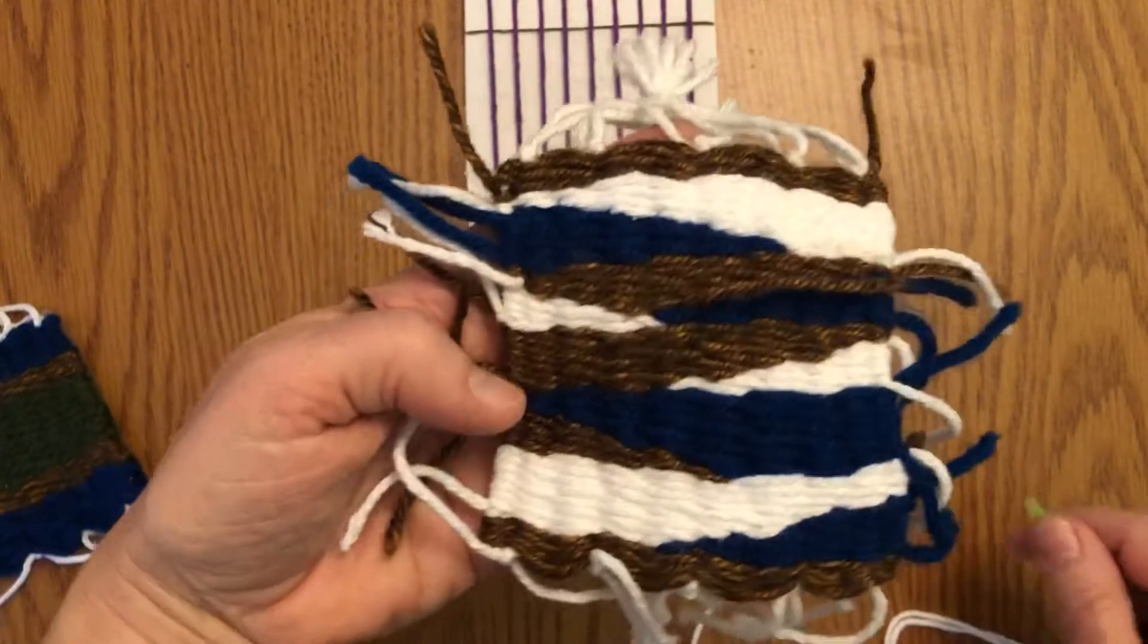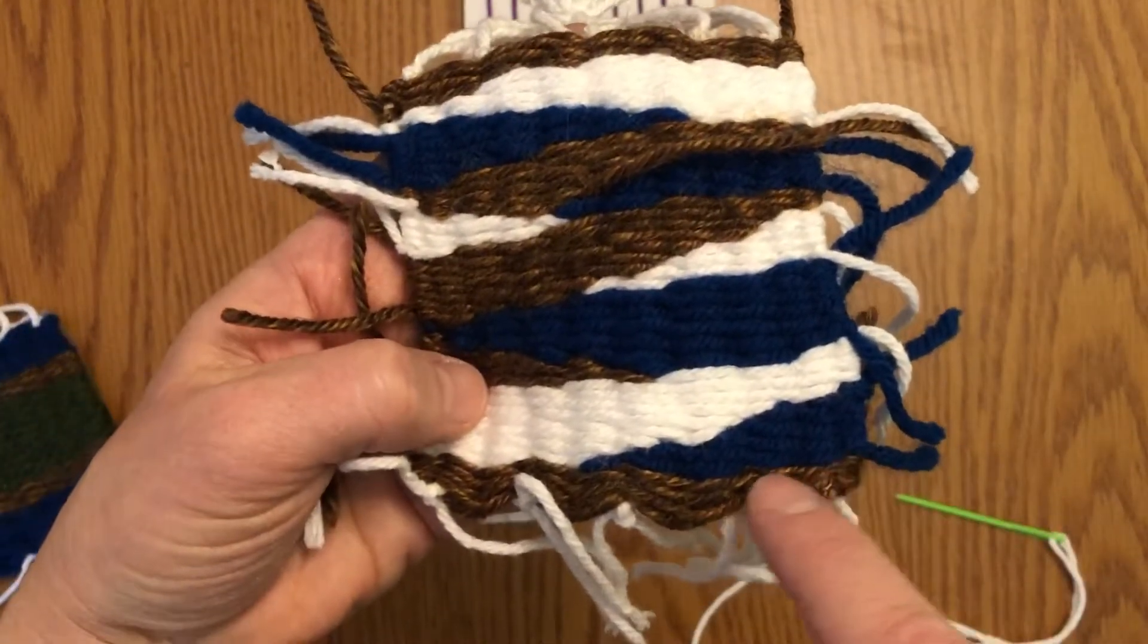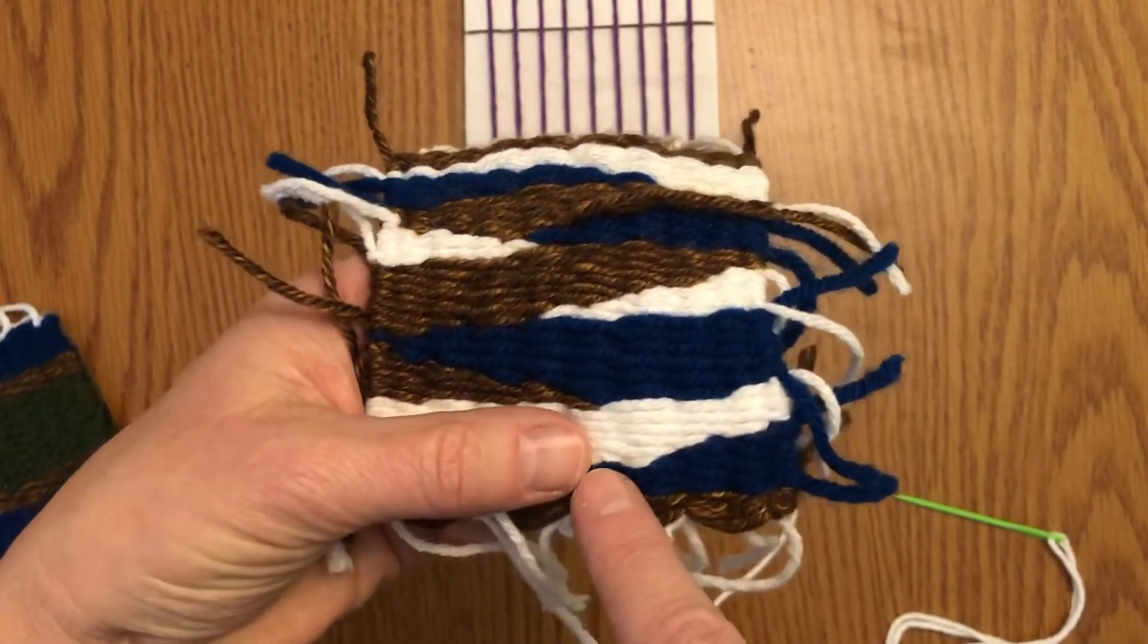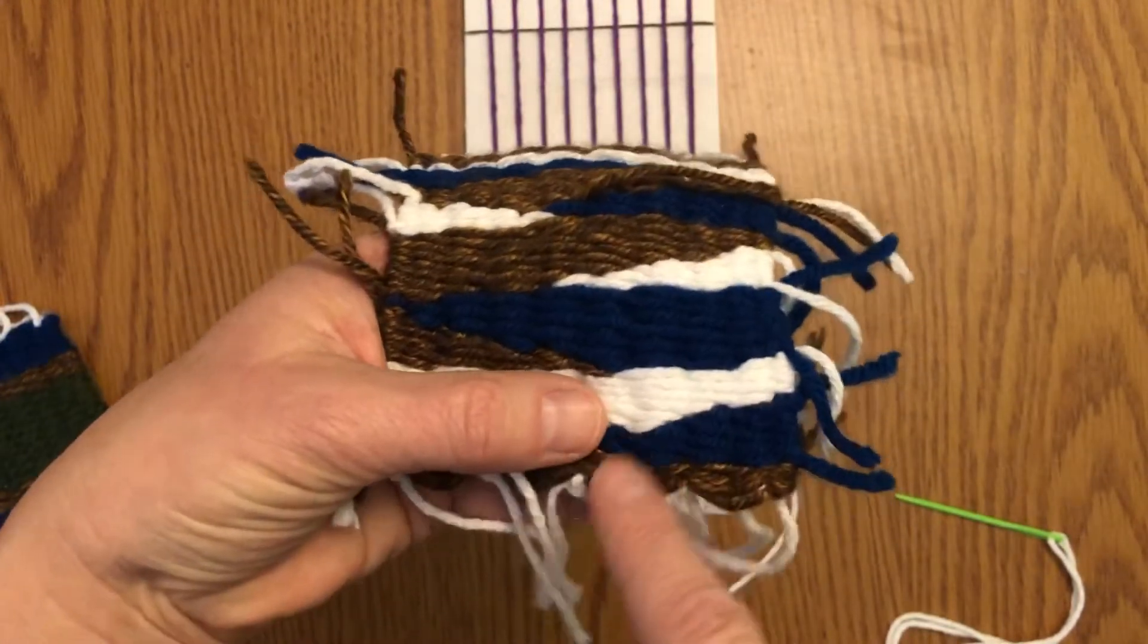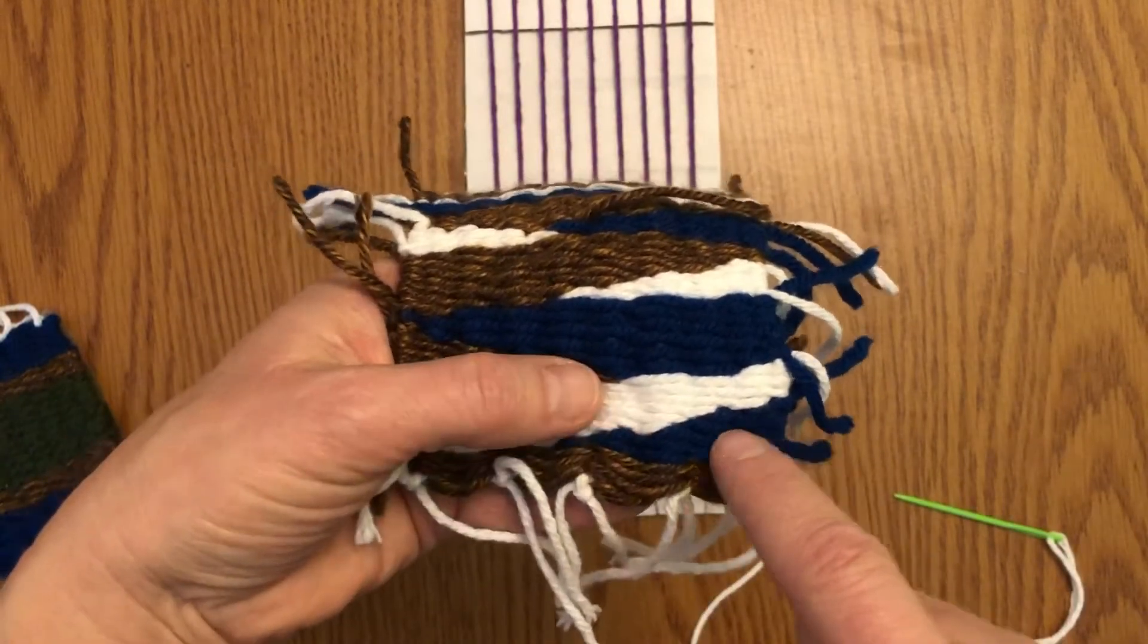To do that, all you have to do is you're going to do the tabby weave going across, but then when you come back you're going to go one warp string less. You'll come back and you'll just gradually do that—one warp less each time you go over.